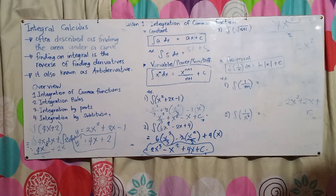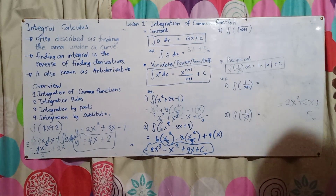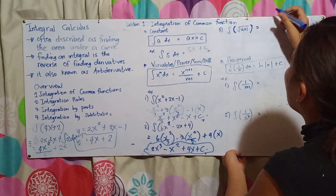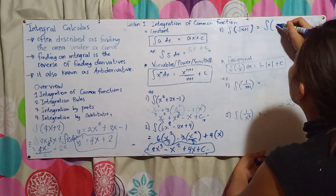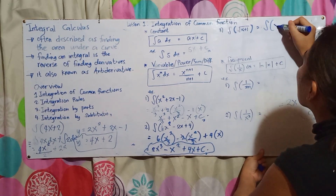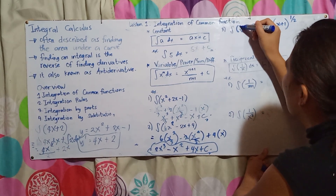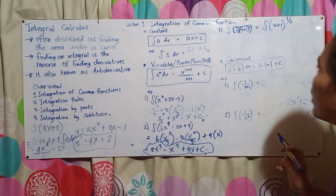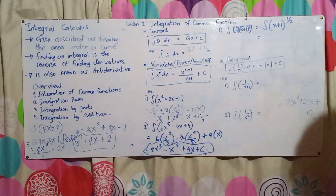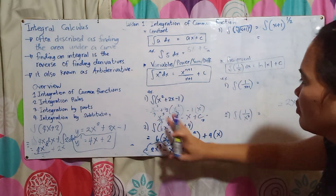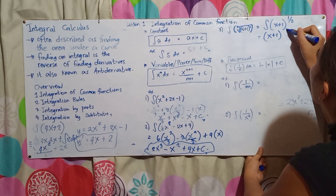Next is the integration of √(x+1). Since it's under a radical sign, we first transform it into exponent form. The square root of (x+1) equals (x+1) raised to the power of 1/2. Then in integration, we add 1 to the exponent: 1/2 + 1 = 3/2.